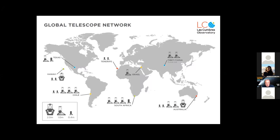Here's where it gets a little complicated. The Faulkes Telescopes — the two two-meter telescopes — were sold. We started as the owners and operators and provided time for science projects and a lot of time for UK and Ireland schools. Those telescopes were then sold to a bigger group called Las Cumbres Observatory, based in Santa Barbara, California. They've taken the idea of putting telescopes in different parts of the world and run with it, now having a network of telescopes illustrated by dots on a map.